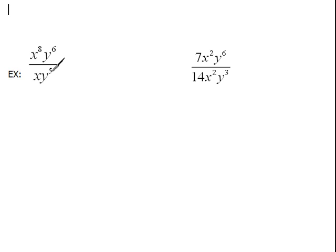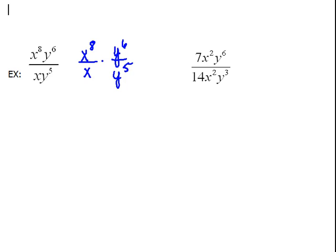Now let's work a couple of examples. Here we have x to the 8th times y to the 6th over x times y to the 5th. Everything on top is being multiplied and everything on the bottom is being multiplied. We could break this up into x to the 8th over x, times y to the 6th over y to the 5th — because when you multiply fractions you multiply straight across, so you can also break them apart and mean the exact same thing. I just wanted you to see why we can work with things this way.